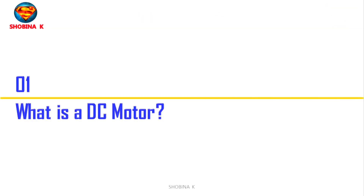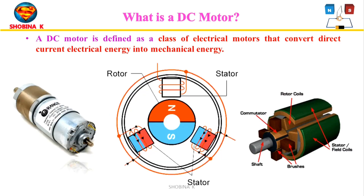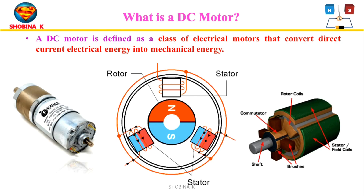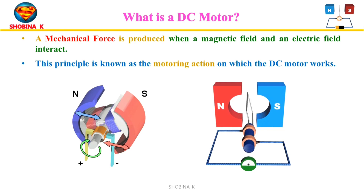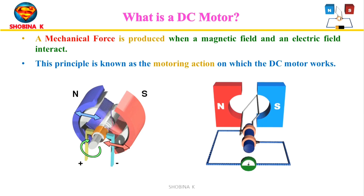A DC motor is defined as a class of electrical motors that convert direct current electrical energy into mechanical energy. A current carrying conductor experiences a torque when placed in a magnetic field and tends to move. Therefore, mechanical force is produced when a magnetic field and electric field interact, and this principle is known as motor action, on which the DC motor works. Any electric motor operated using direct current is called a DC motor.